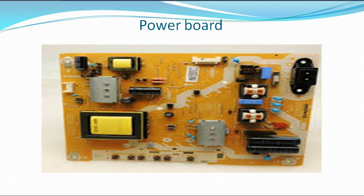The voltage that is in this source — that is in this primary section — will be greater than the voltage that will be applied or that will enter in this particular secondary source. That is the work of this optocoupler. What it does is to act as the interface between the two different voltage levels. The voltage in this section is different from the voltage in this section. What it does is to carry voltage from this source and give it to this area.